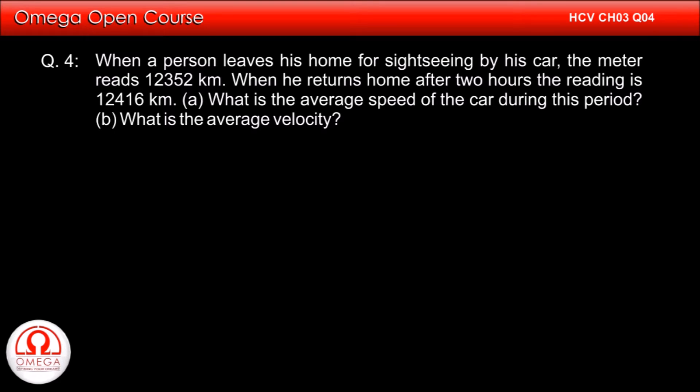When a person leaves his home for sightseeing by his car, the meter reads 12,352 kilometers. When he returns home after 2 hours, the reading is 12,416 kilometers. (a) What is the average speed of the car during this period? (b) What is the average velocity?